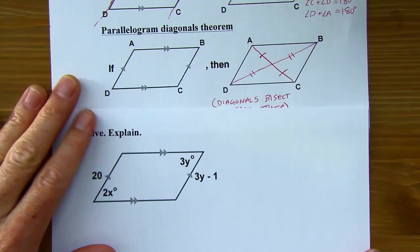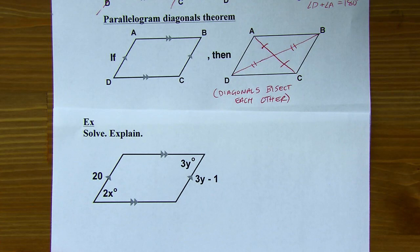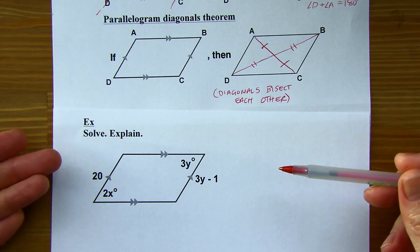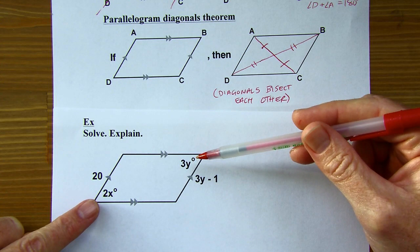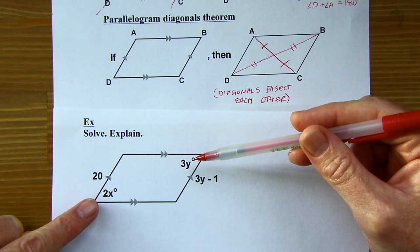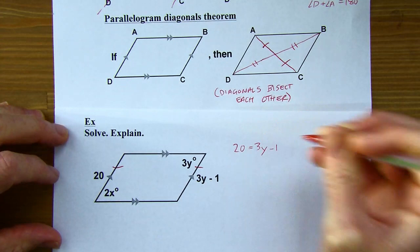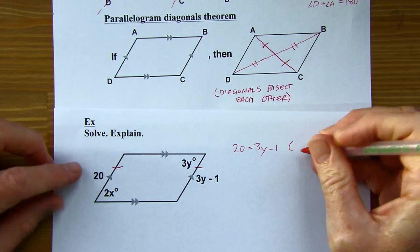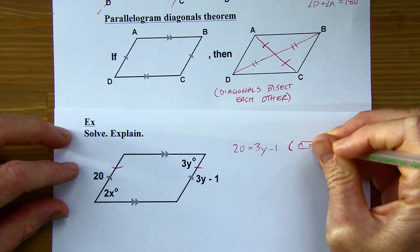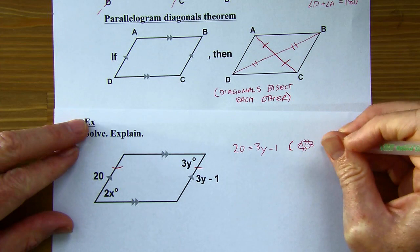So we're going to solve for any of the variables. I've got a parallelogram, so I can use any of those properties. I could say the opposite angles are congruent, so 2x would equal 3y, but I can't solve that because I've got two variables. So I'm going to come back to that. Also, the opposite sides are congruent, so I can say 20 equals 3y minus 1. To write this equation, I used the parallelogram opposite sides theorem.